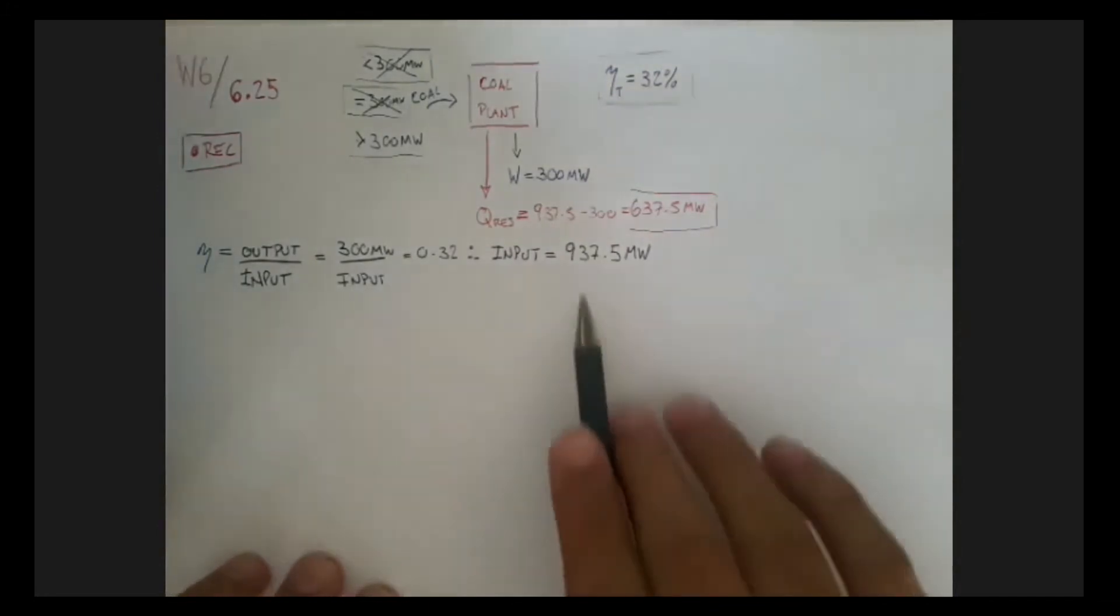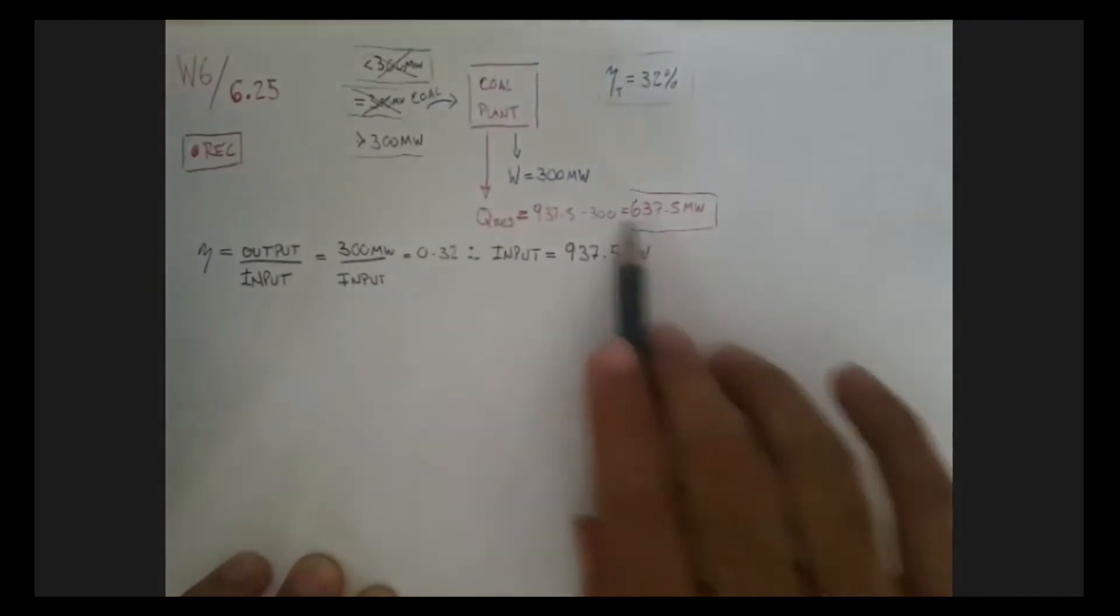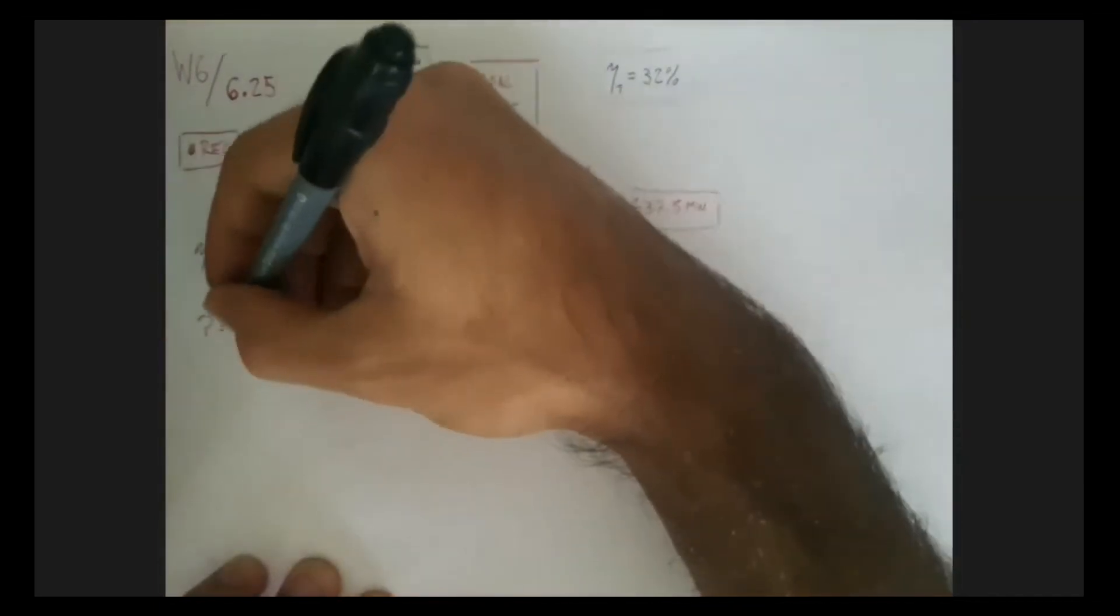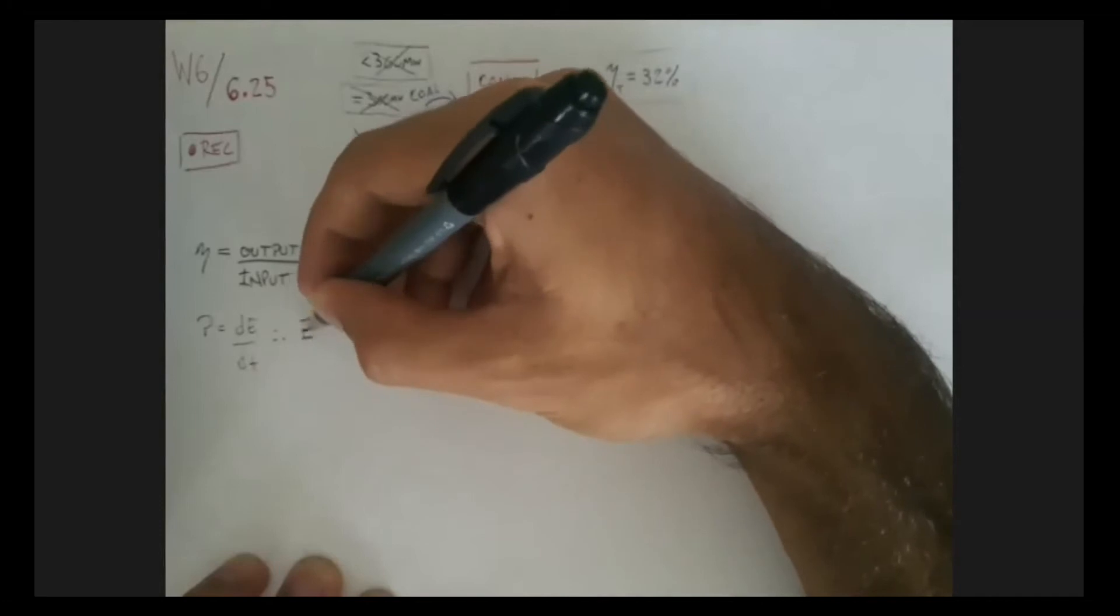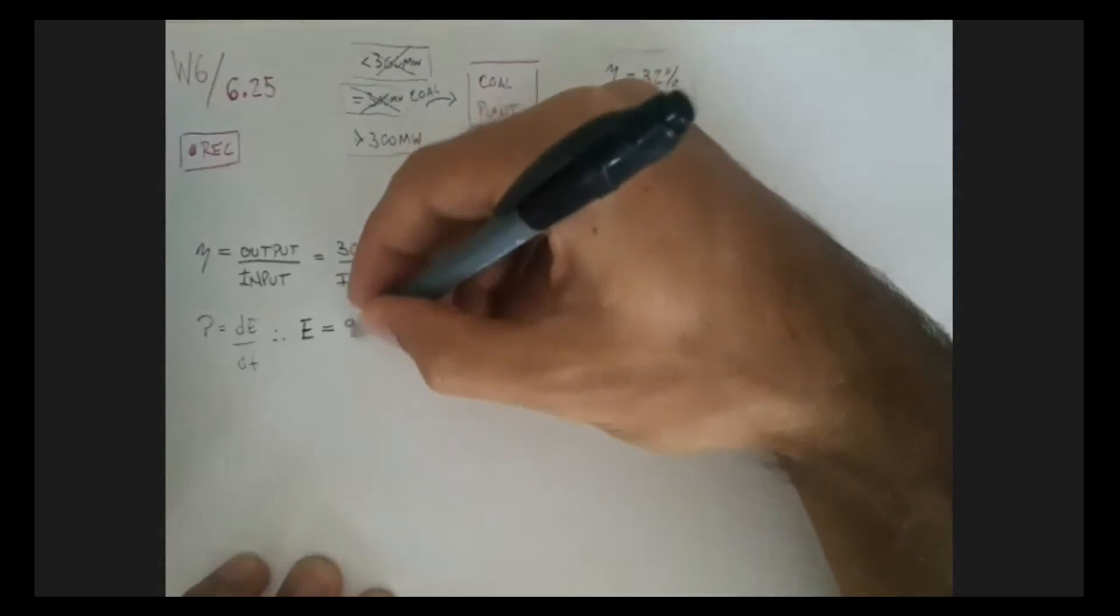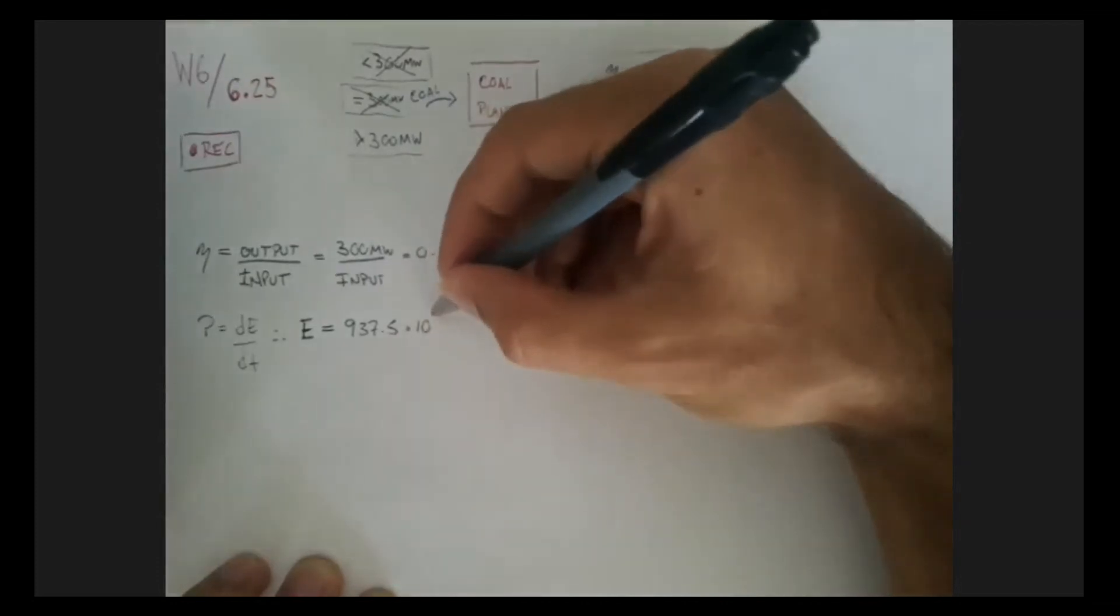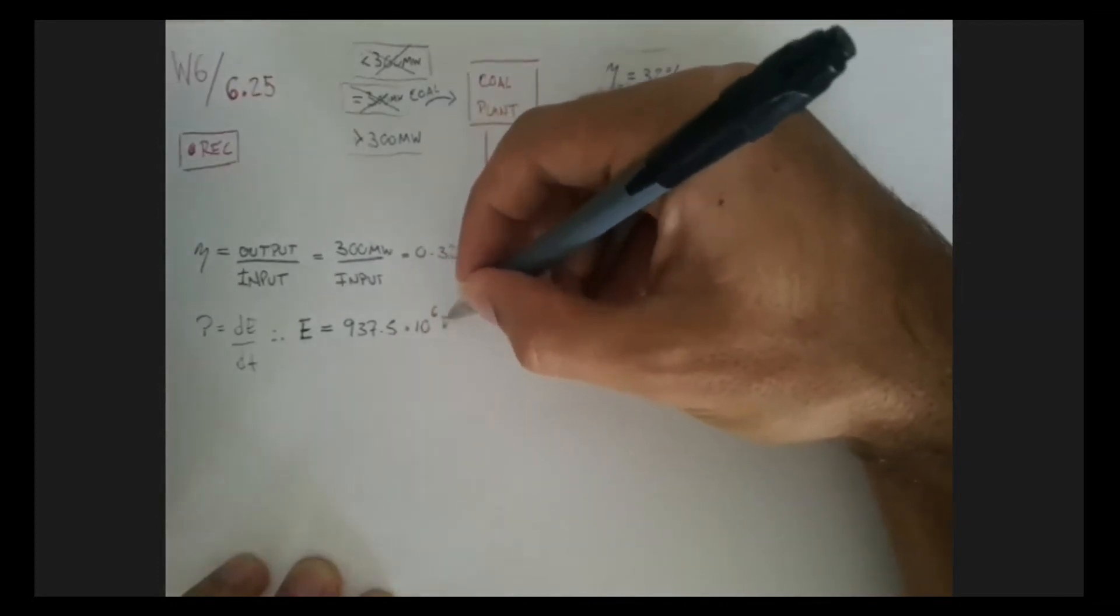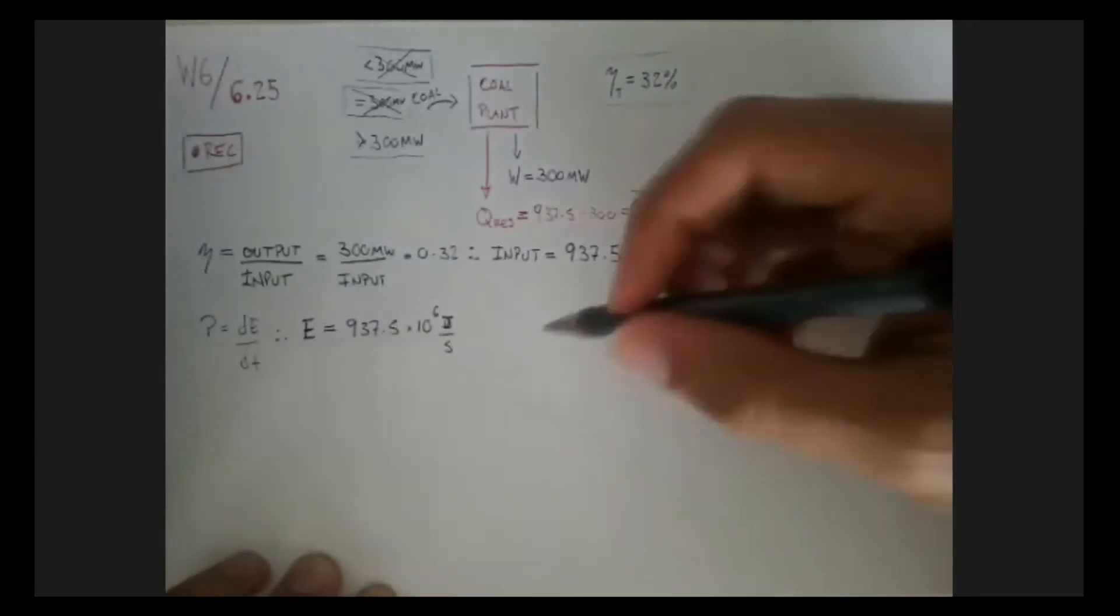So now we have this amount of input, and that's the amount of coal we need to put inside. We need to transform this into energy, and we know the relationship between power and energy is that power is just how energy varies with time. For us to get the amount of energy that we need to give to this, we just need to multiply this power, 937.5 megawatts, which is the same thing as times 10 to the 6 joules per second.